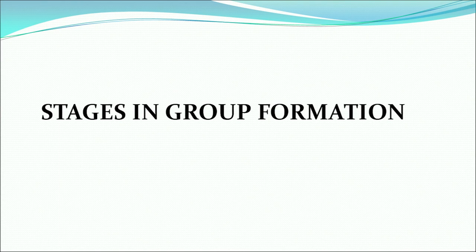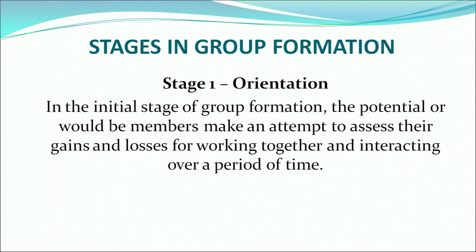The most important question is how groups are formed. Initially, the first stage is orientation. In this stage of group formation, the potential or would-be members make an attempt to assess their gains and losses for working together and interacting over a period of time. This means that when a person feels their needs are similar to those of other people, they are oriented or have an inclination towards the other member. This is stage one in group formation — orientation. Stage two is focus.